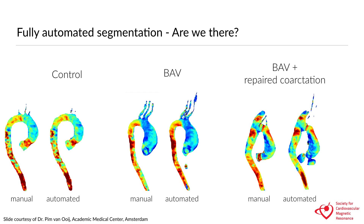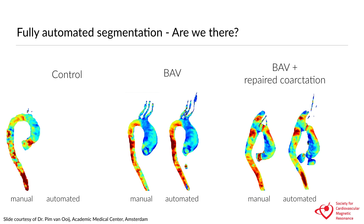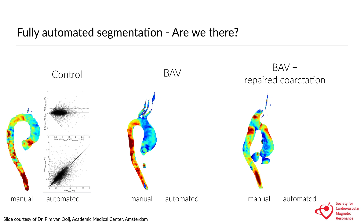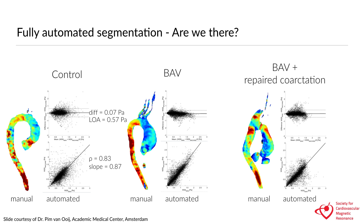On the left side we see a control person, in the middle a patient with a bicuspid aortic valve, and on the right a patient with a bicuspid aortic valve and a repaired coarctation. When we look at the parameters that come out, these compare very closely between the automated and manual methods, as you can see in the Bland-Altman plots. The differences were very minor and probably not clinically relevant. So this is also an area where machine learning is really ready to come into clinical practice.